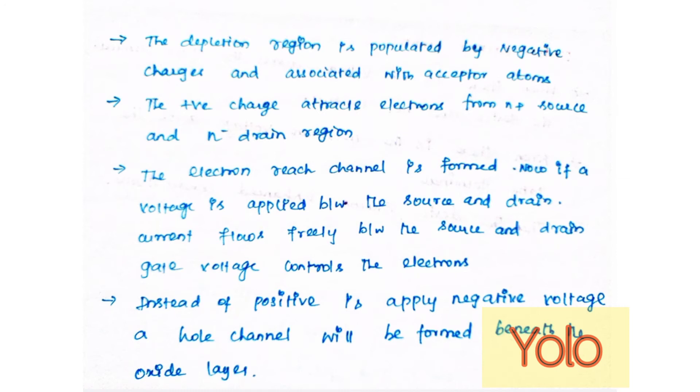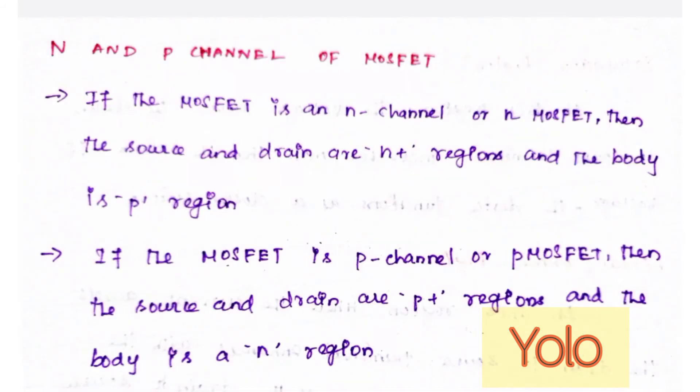The gate voltage controls the electron concentration in the channel. Instead of positive, if we apply negative voltage, the hole channel will be formed beneath the oxide layer.